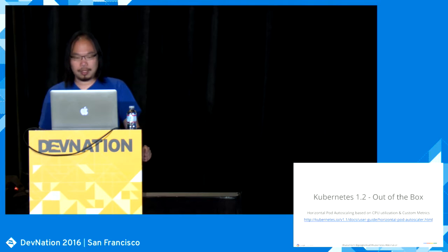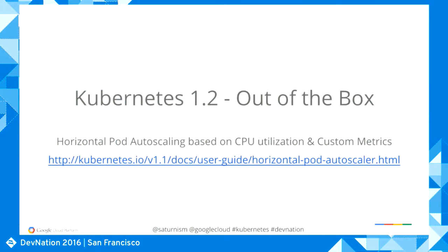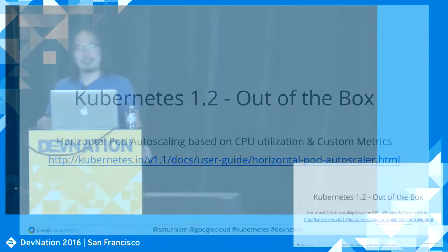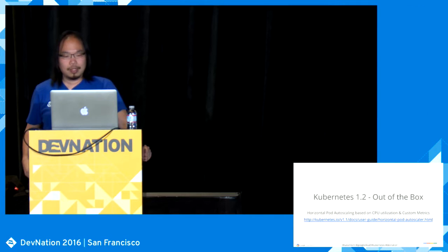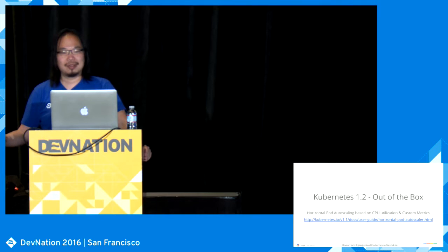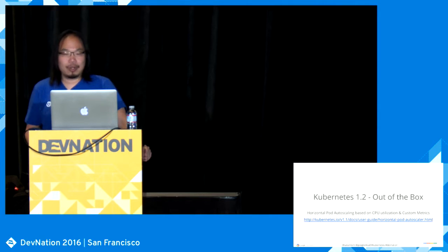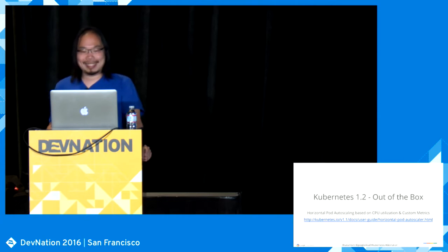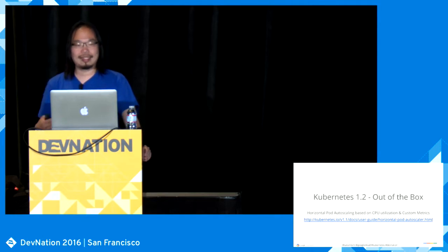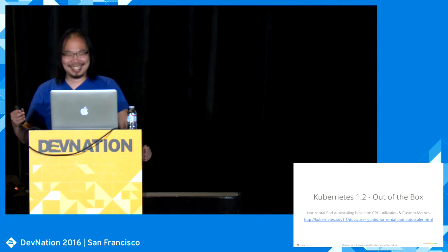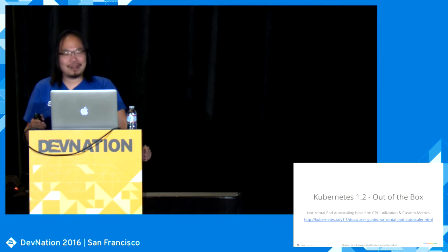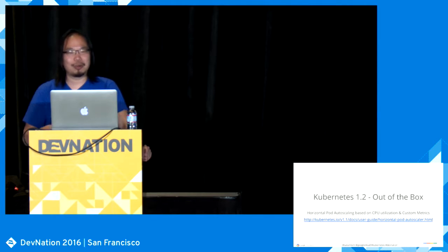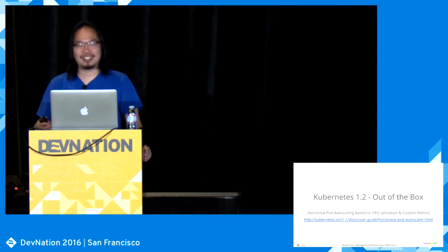Today we're going to talk about a few things most people don't know about — first, autoscaling. When I started learning about Kubernetes, there was no autoscaler built in, so I went out and wrote my own. I want to share my experiences and lessons learned. I should point out that since I wrote it, many months later they actually added a real autoscaler in Kubernetes 1.2. That's the one you really want to use, but I want to use my autoscaling example to demonstrate some of the more advanced Kubernetes features. Using the built-in autoscaler is really easy — just one command: kubectl autoscale with the name of your deployment.